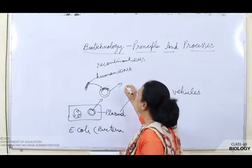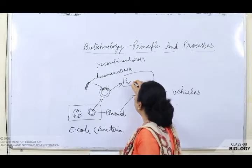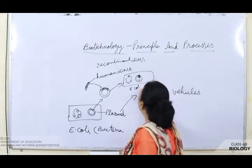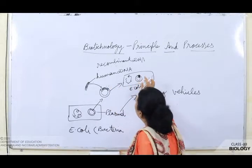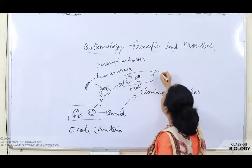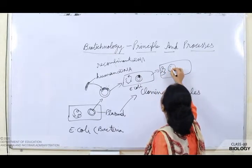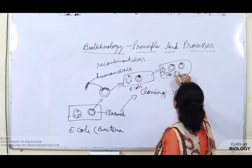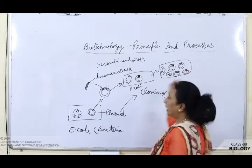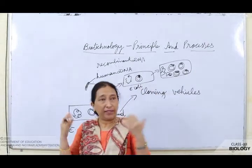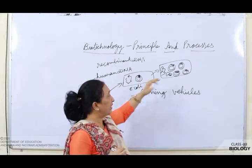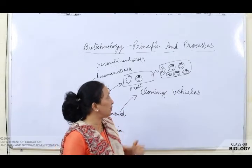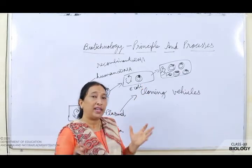This recombinant DNA is again inserted into E. coli bacteria. When it is inserted, as the bacteria multiplies its DNA, this extra-chromosomal plasmid will also keep dividing, so we can get multiple copies. We took just one DNA, but when E. coli multiplies, it multiplies the plasmid along with its own DNA, giving us a huge number of copies.